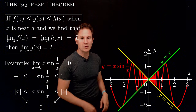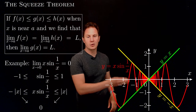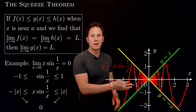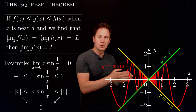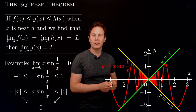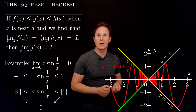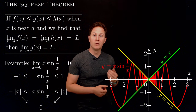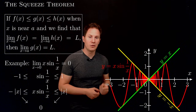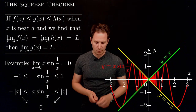Here is the illustration. We see the graph of the function in red being squeezed between the lower and upper bounds and being forced to have the same limit 0 as x approaches 0.